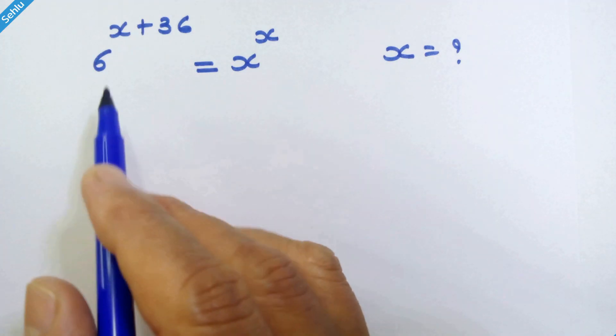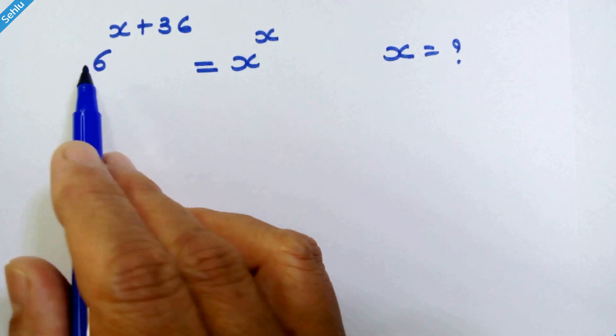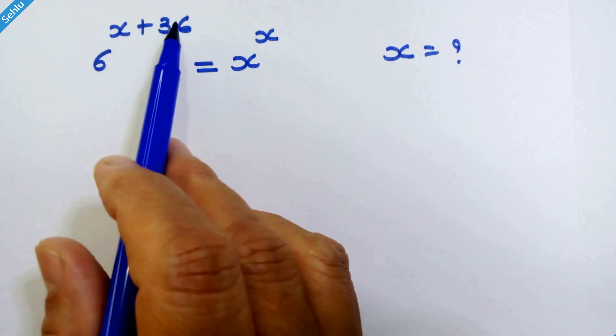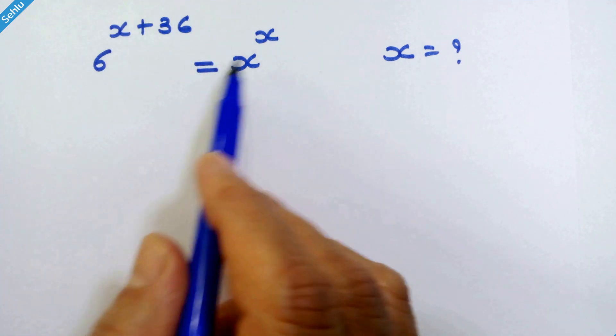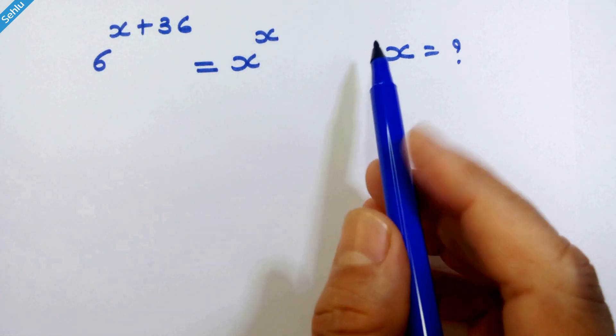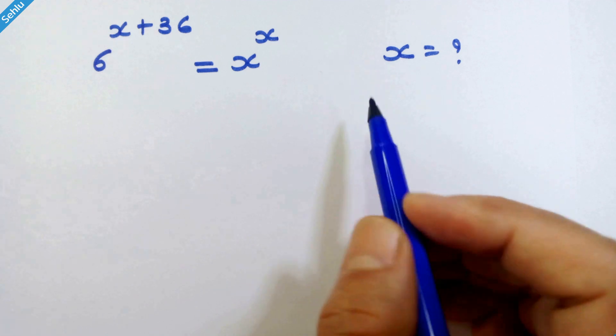Hello my dear friends. What we have here is 6 raised to x plus 36 is equal to x raised to x. So let's find out x.